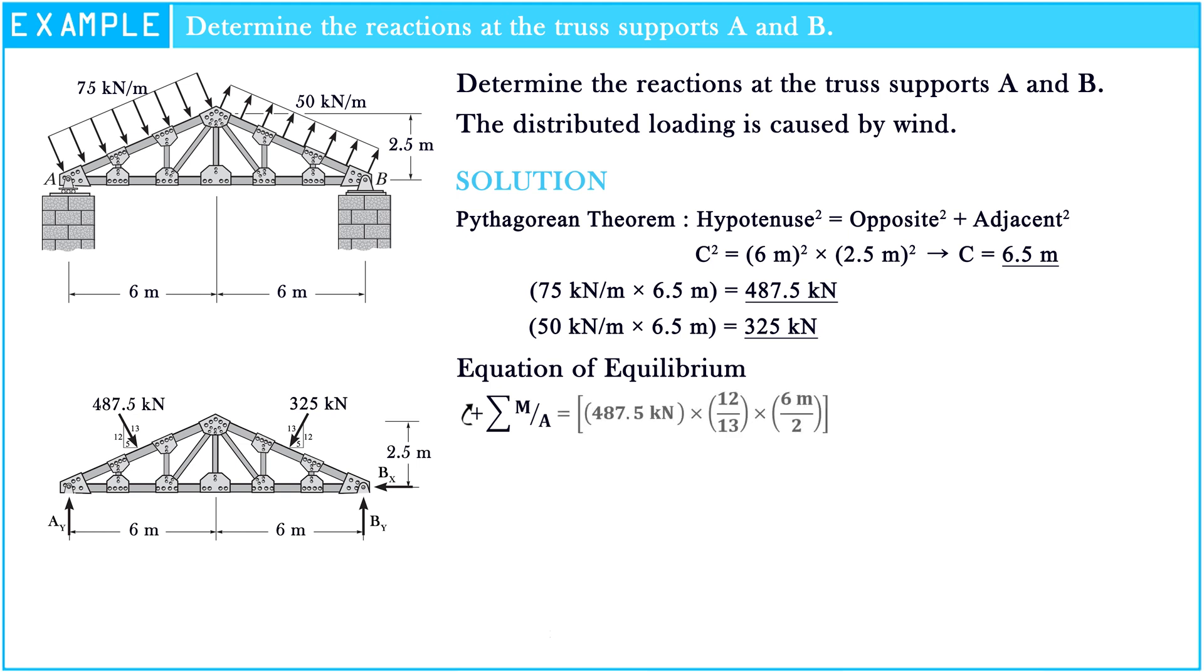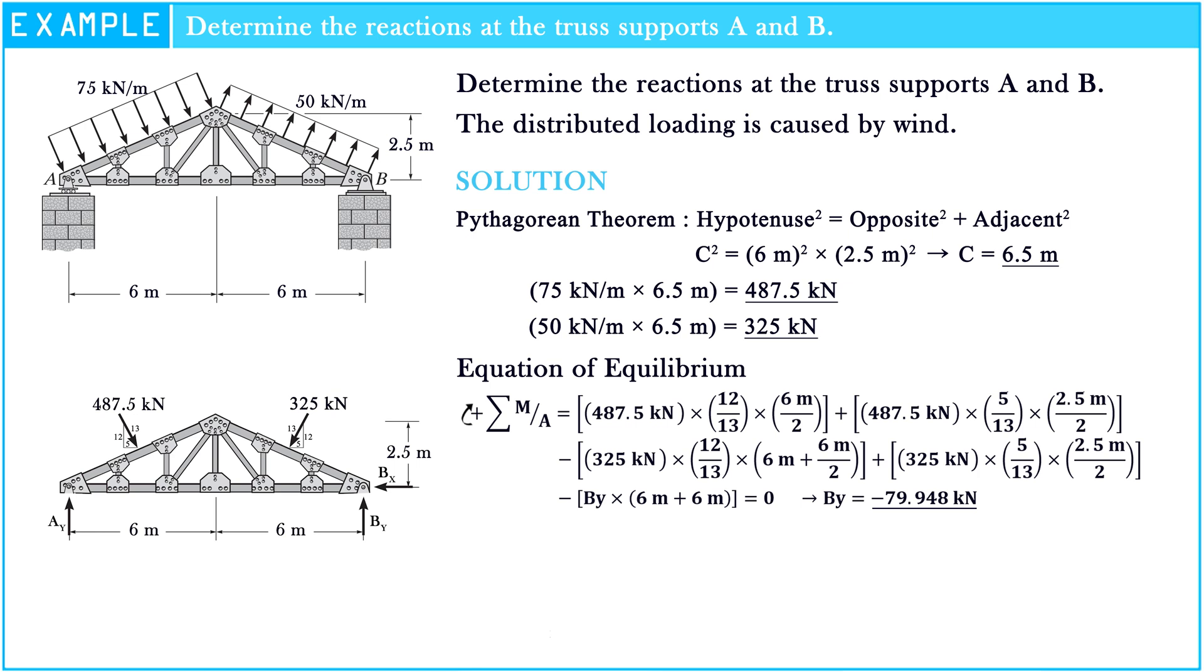487.5 kN multiply by 12 over 13 multiply by 6 meters divide by 2, plus 487.5 kN multiply by 5 over 13 multiply by 2.5 meters divide by 2, minus By multiply by 6 meters plus 6 meters is equal to zero. Hence, for the calculation of the equation, By is equal to negative 79.948 kN.